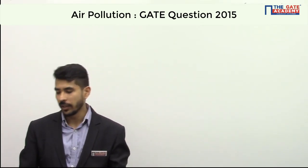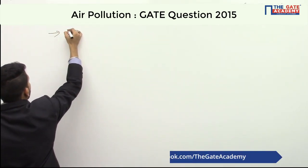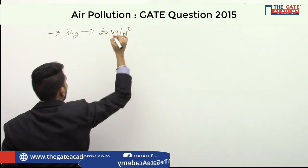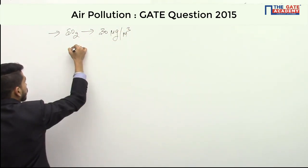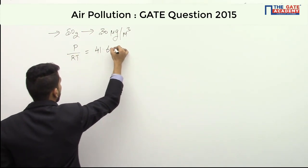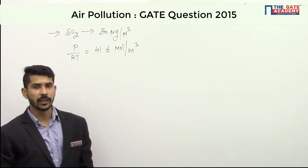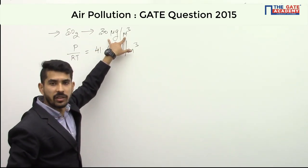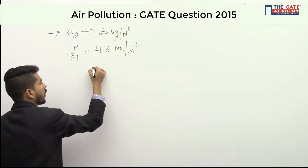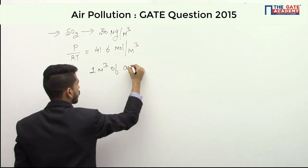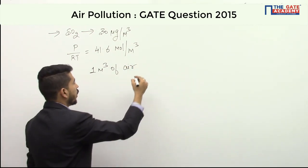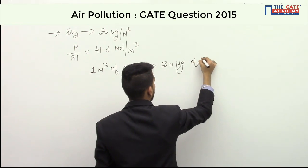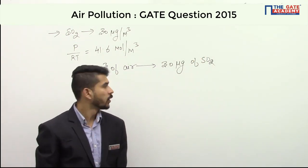So according to the question, the given data is: concentration of SO₂ is given as 30 micrograms per meter cube, and P/RT equals 41.6 moles per meter cube. He is asking the concentration in PPM. Now, this concentration means that in one meter cube of air, we have 30 micrograms of SO₂.